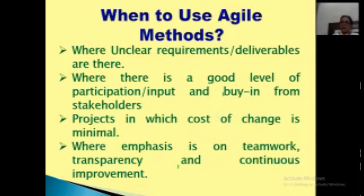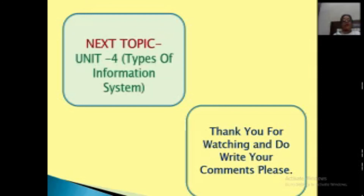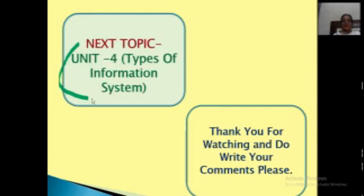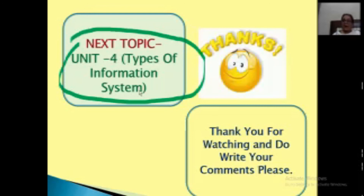To sum up, Agile method is a very evolving method these days and there are different examples of Agile processes being used. Do write down in the comment box which kinds of questions have come up in your question papers earlier in your various universities, like differences between waterfall model and agile development. Our next topic will be the start of Unit 4, which is types of information systems - again a very important topic. Keep watching Simple Digital School. Do write down your valuable suggestions in the comment box. If you are new to the channel, do subscribe, like and share the videos. Thank you for all your support.